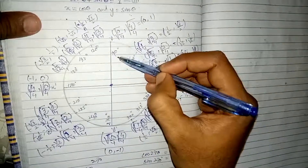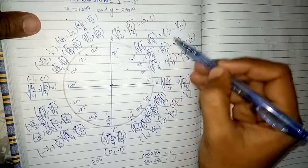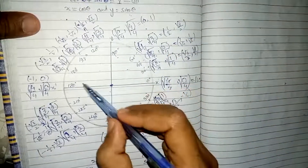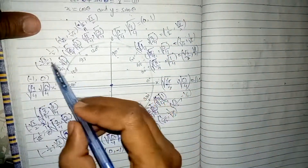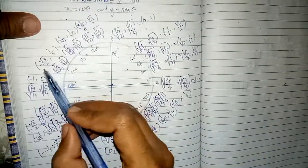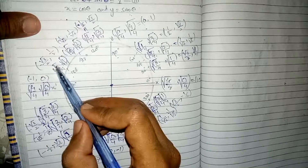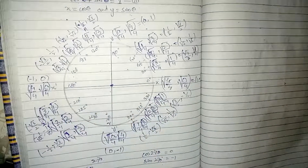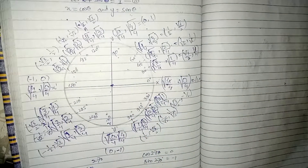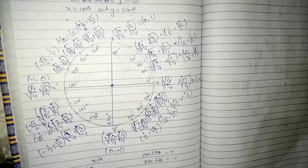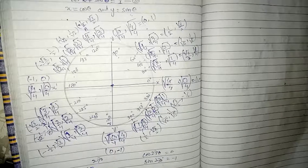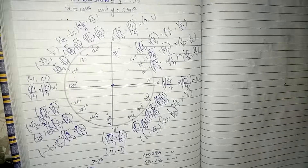For example, at 90 degrees the values are 0 comma 1, and at 150 degrees the values are minus root 3 over 2 and 1 over 2. Hopefully you have understood how we can find trigonometric values without the help of a calculator. If you find this video helpful, please like, comment, and subscribe to my channel. Thank you.